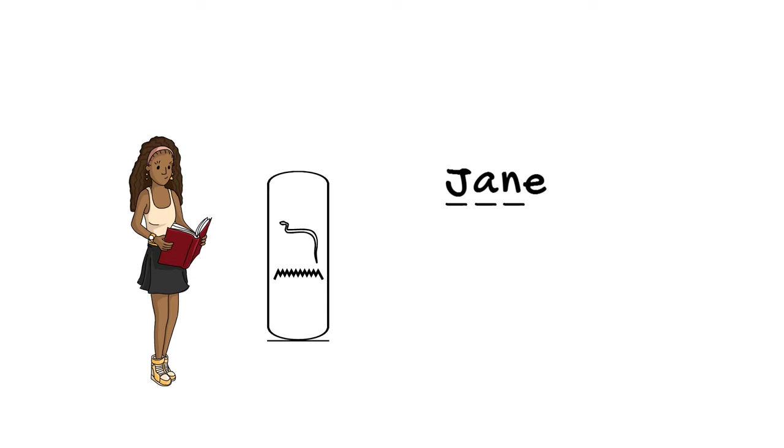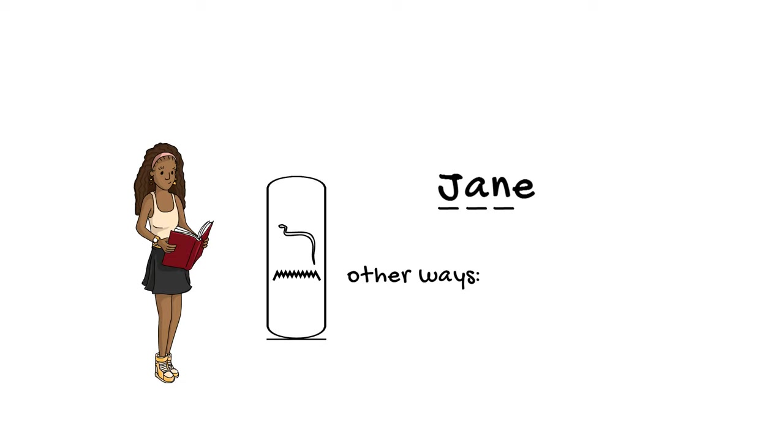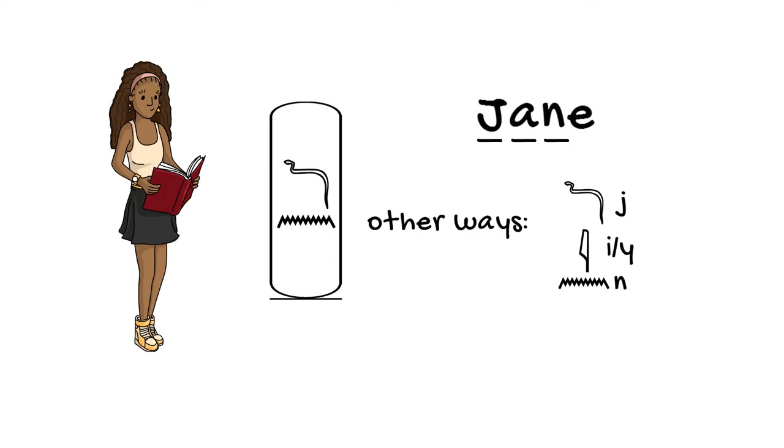Alternatively, you could actually put the reed leaf in the name, but I wouldn't put it at the end like we saw before. I would put it in the middle. And that's because the reed leaf actually represented a very light Y sound, a very slight Y. And when we say the name Jane in English, we tend to pronounce it with this very slight Y sound just before the N. Jane. So you could use J-I-N or cobra reed leaf water.